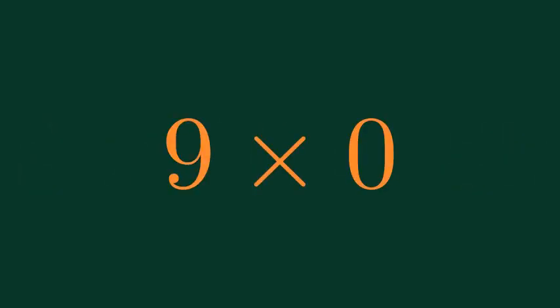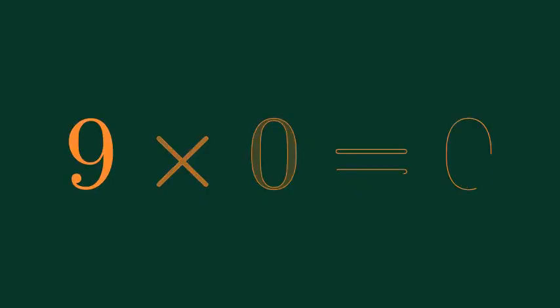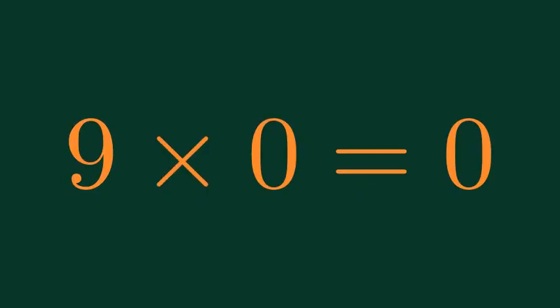9 times 9 is equal to 80. What is 9 times 0? 9 times 0 is equal to 0.